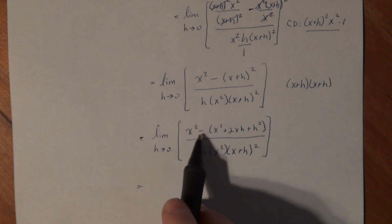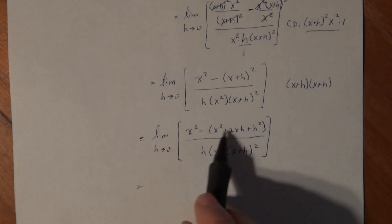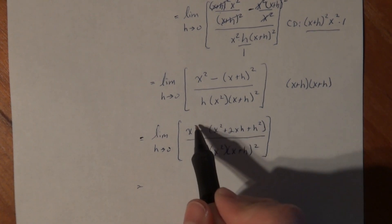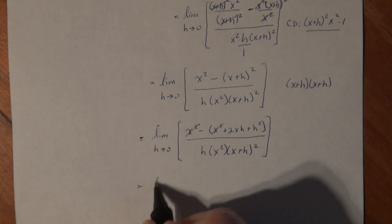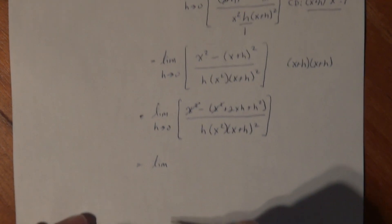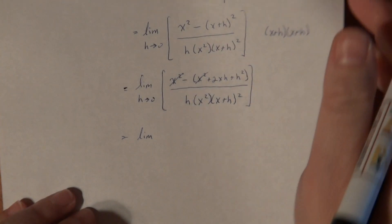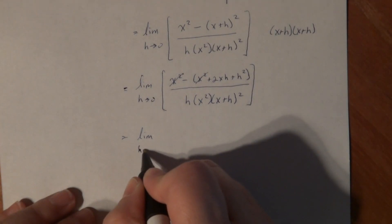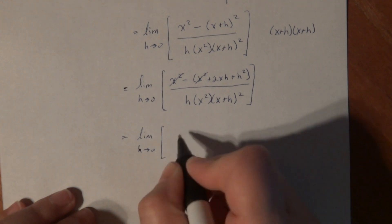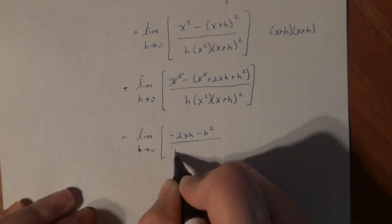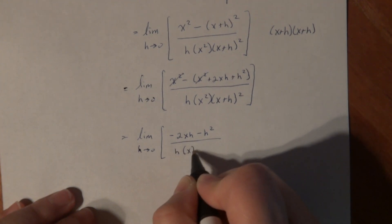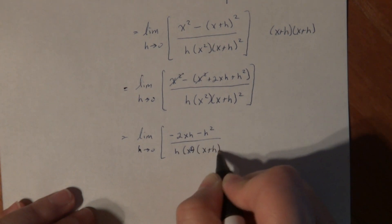Okay, now, once I distribute this negative, everything in this parenthesis becomes negative. So I have a plus x squared minus x squared. So those guys go away. So let's see, what am I left with here then? I'm left with the limit as h goes to 0 of minus 2xh minus h squared divided by h x squared. I lost the 2 there. x plus h squared.